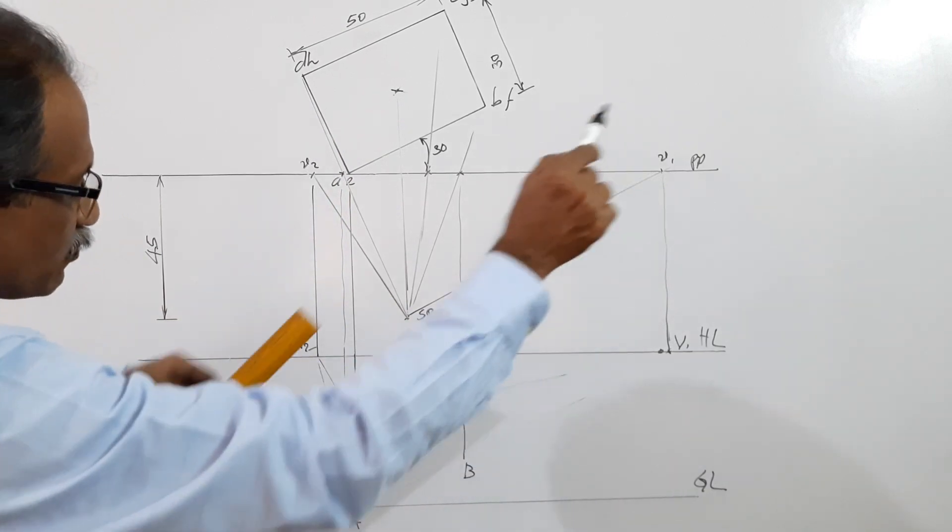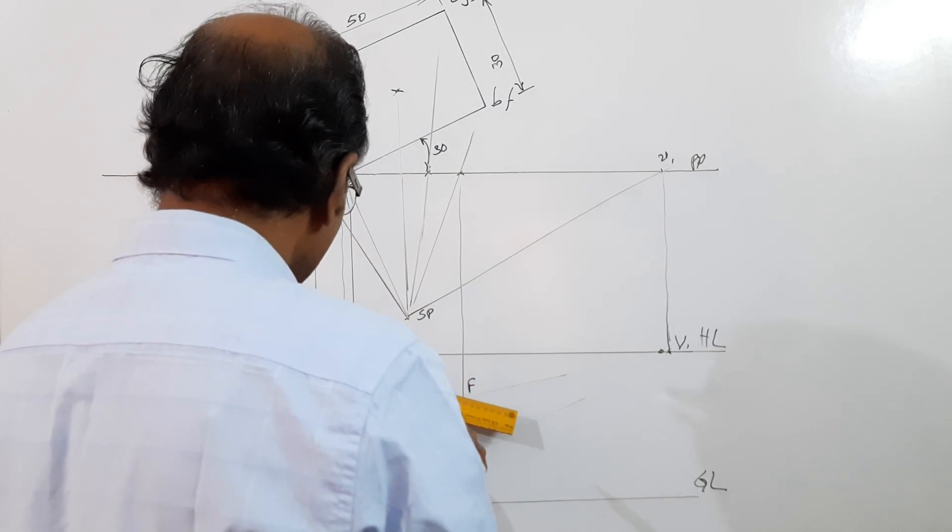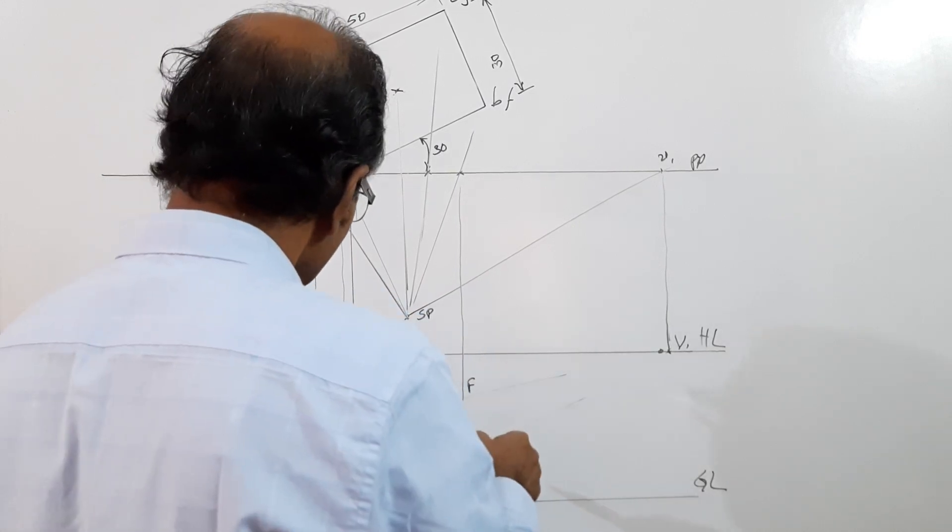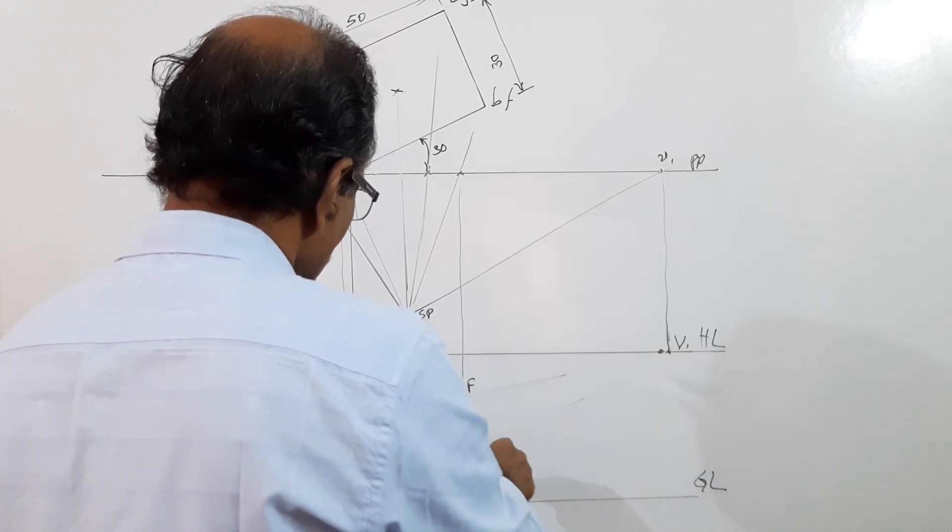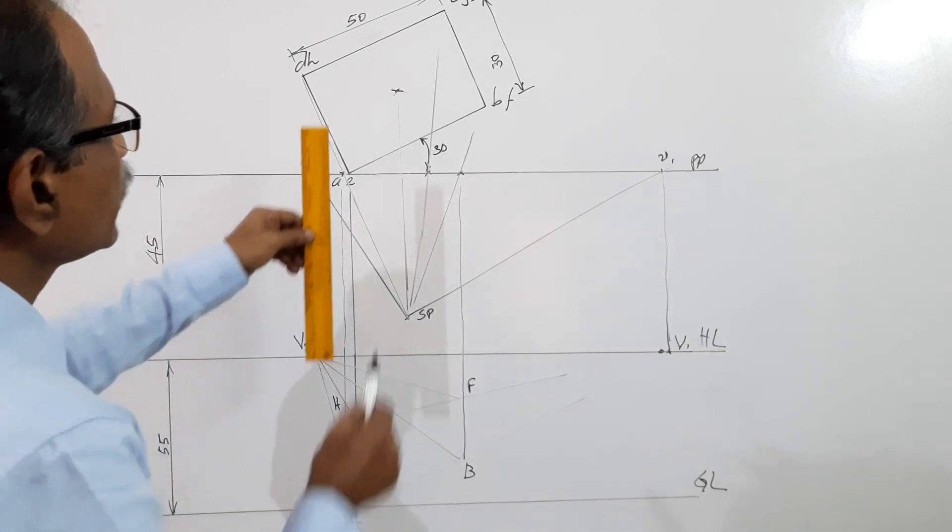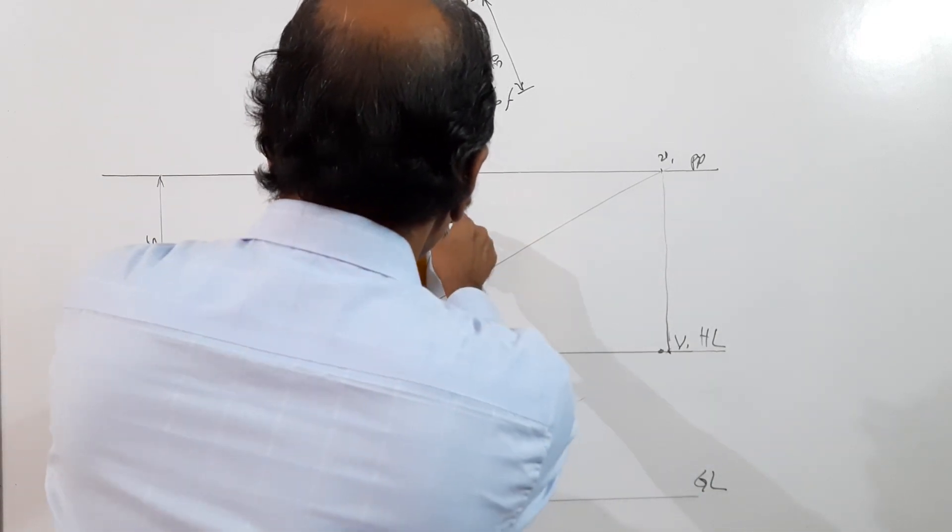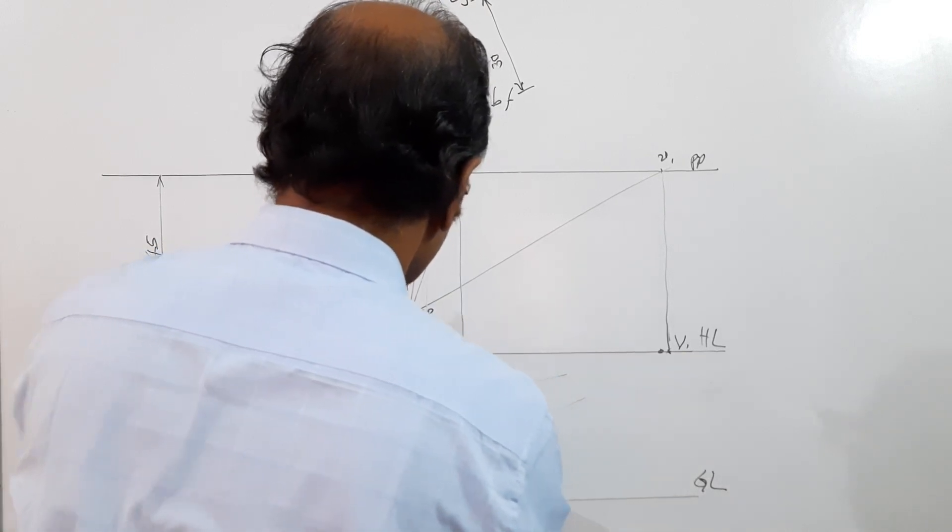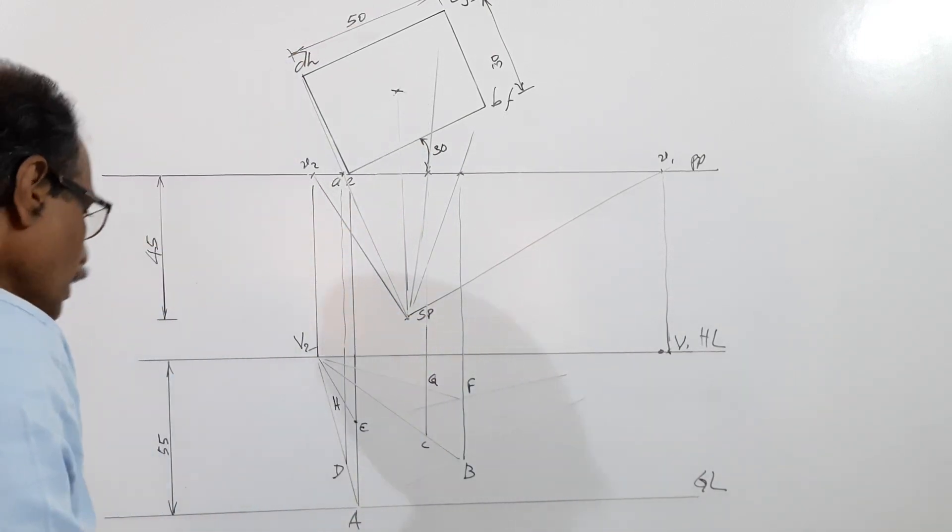Now I join D and H to that vanishing point, or I can use B and F to this vanishing point. That is easier. I join B and F to this vanishing point. Onto that, I drop the intercept of CG. This is C, this is G.